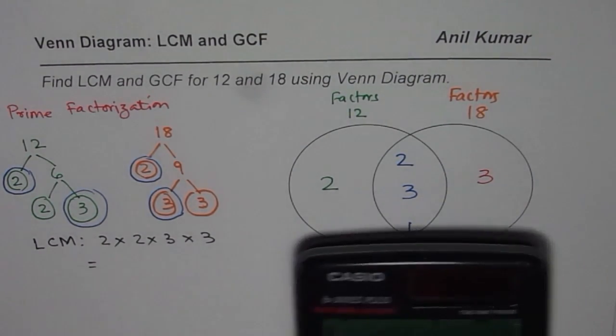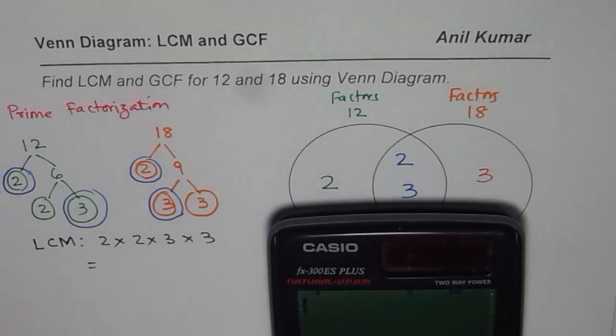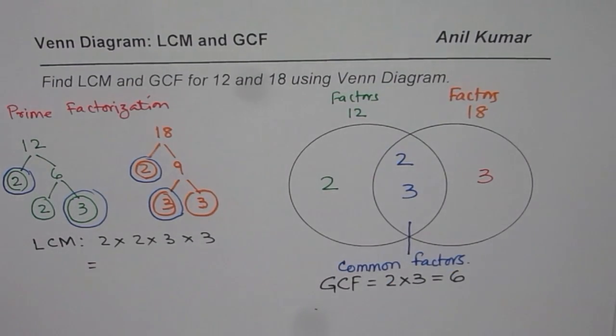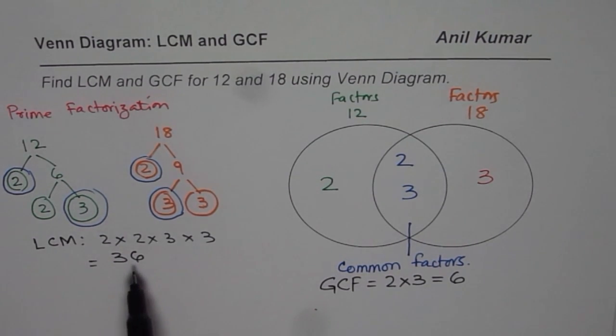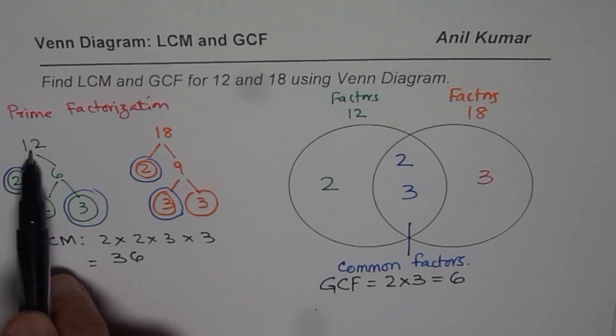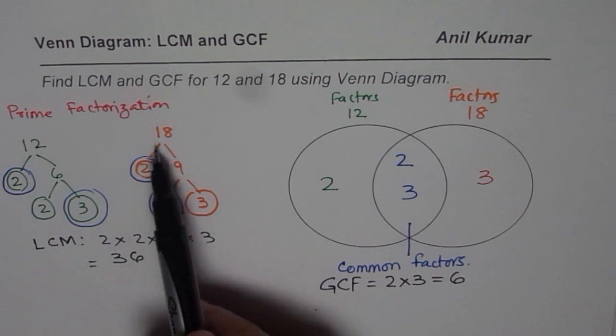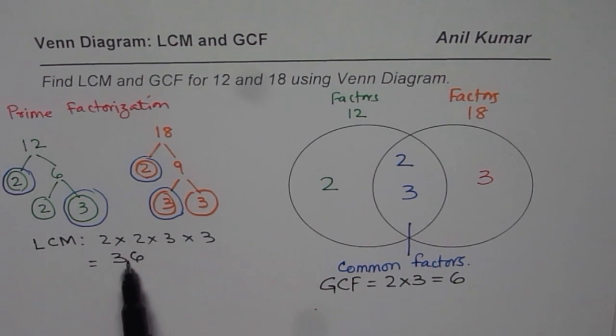So let's use calculator. Just multiply and get the answer. So we get 2 times 2 times 3 times 3 equals to 36. So in this case lowest common multiple is 36. You can check. 12 times 3 is 36. 18 times 2 is 36. So this is indeed lowest common multiple.